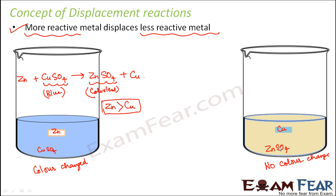In beaker three, copper is reacting with zinc sulfate. The solution would change color only if copper could displace zinc. But since zinc is more reactive, copper is less reactive than zinc and a less reactive metal cannot displace a more reactive metal. Therefore copper cannot displace zinc — confirming that zinc has more reactivity than copper. The relative reactivity between zinc and copper can be easily determined using a displacement reaction.